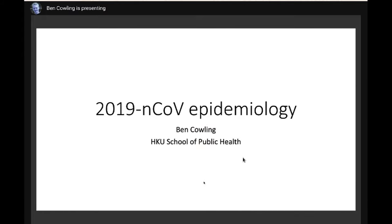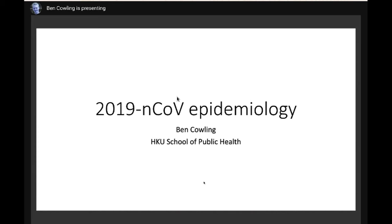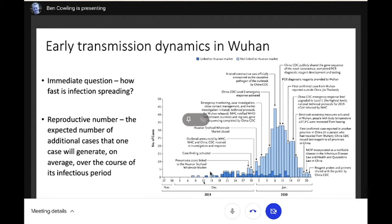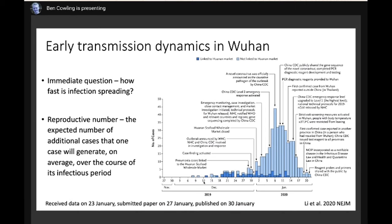I'm Ben Cowling, a professor in epidemiology at Hong Kong's School of Public Health. A few weeks ago I started getting quite interested in the new coronavirus, initially working on publicly available data in early January. Then a couple of weeks ago I got the chance to collaborate with China CDC. We were invited to work with them on the 22nd of January, got hold of data on the 23rd, submitted our paper to the New England Journal of Medicine on the 27th of January, and it was reviewed, accepted, and published very quickly — within a week of starting the analysis.